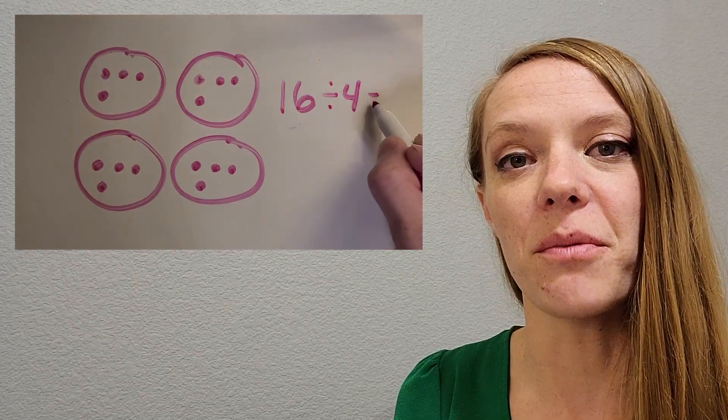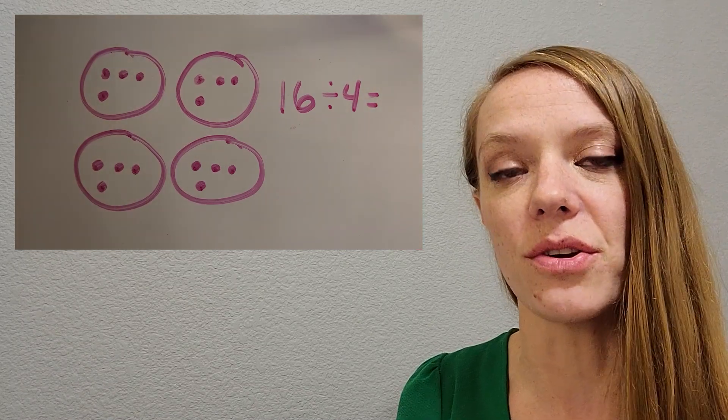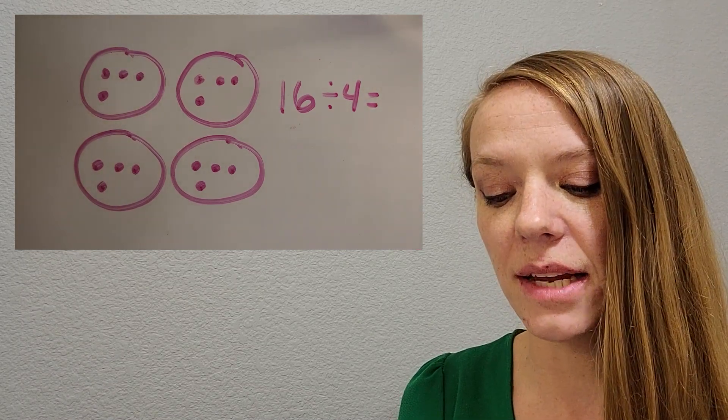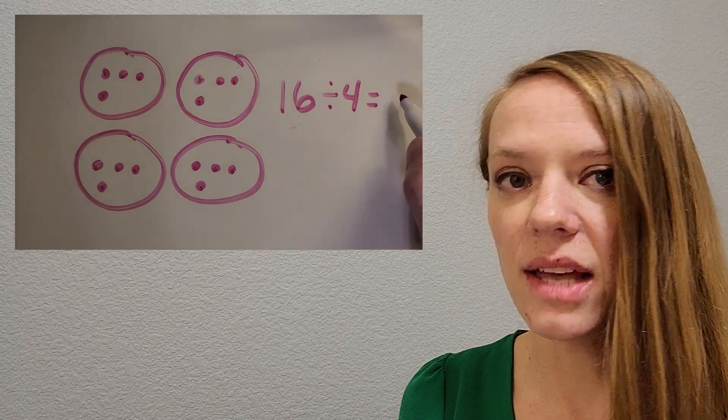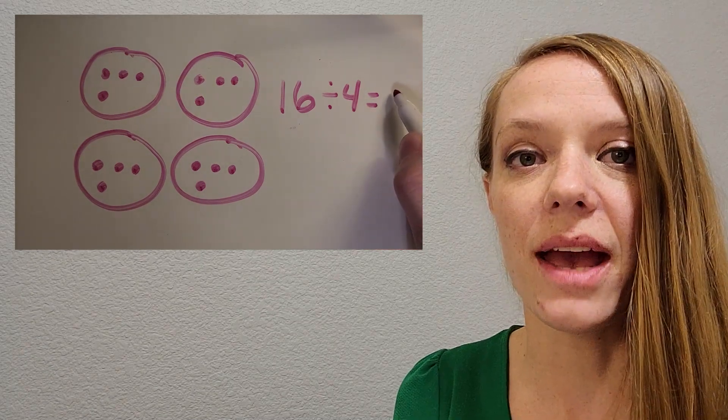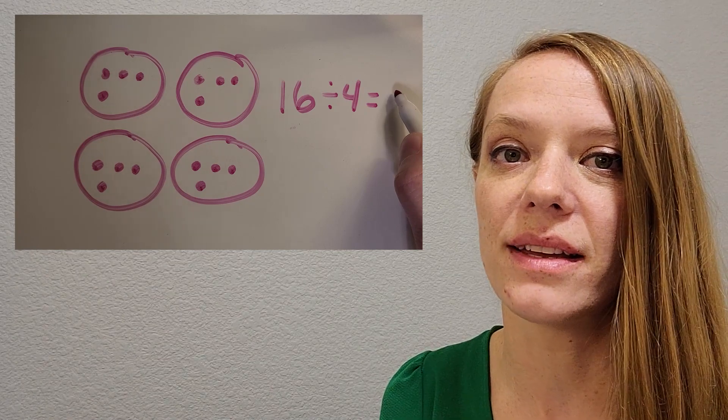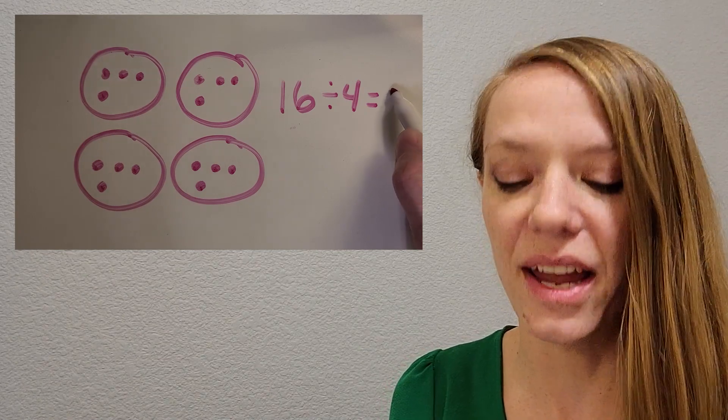So then I'm going to write the problem down below the circles. So 16 divided by four. What do you think that equaled? What did we count in one circle? Okay, great. Four.